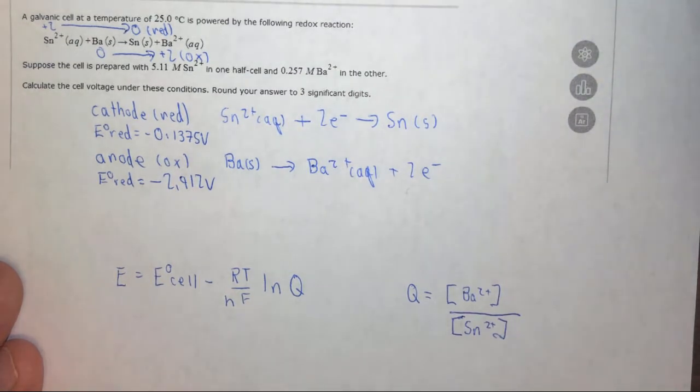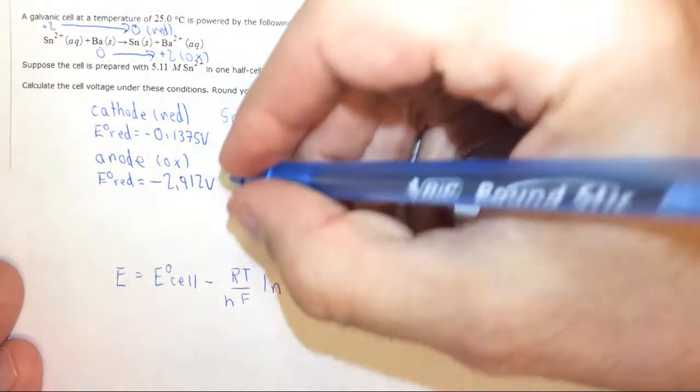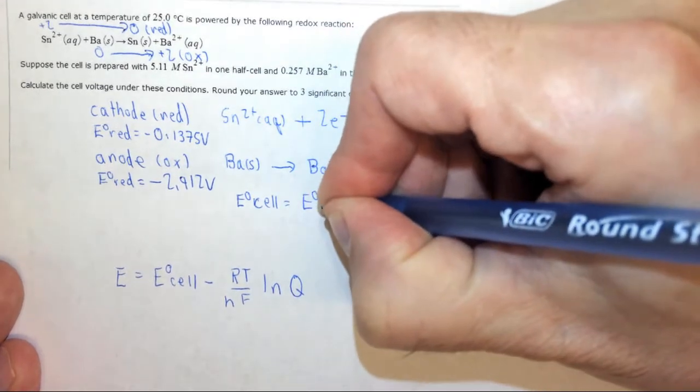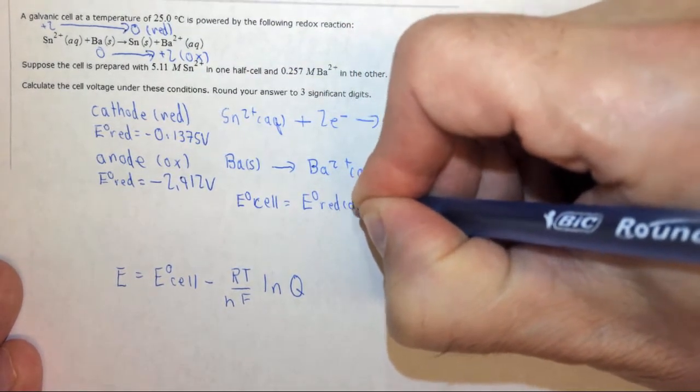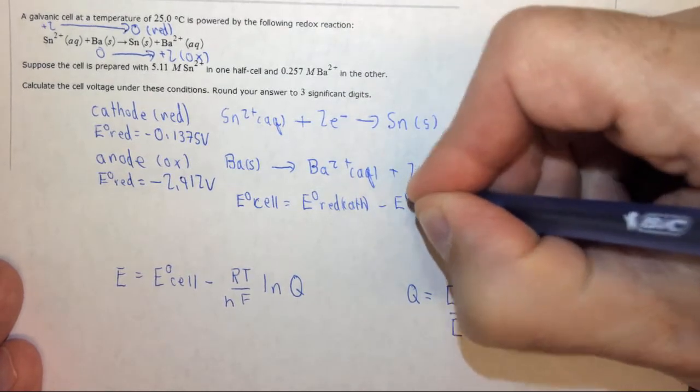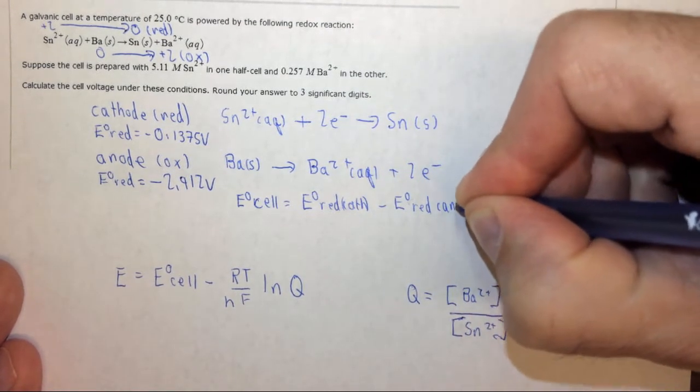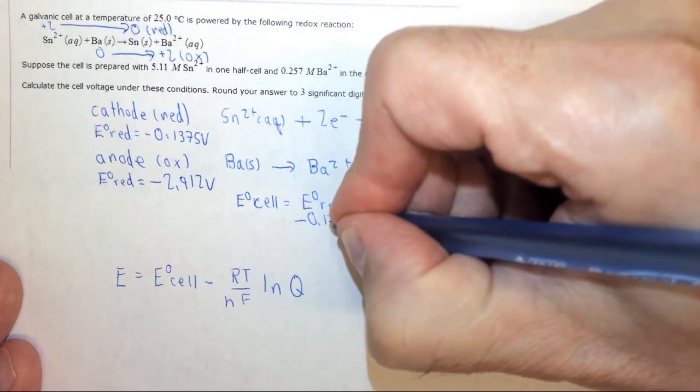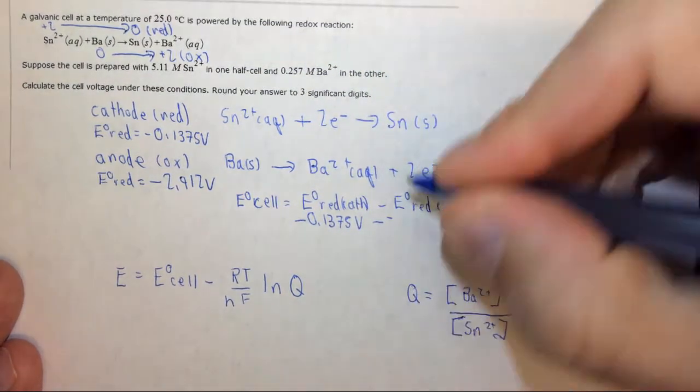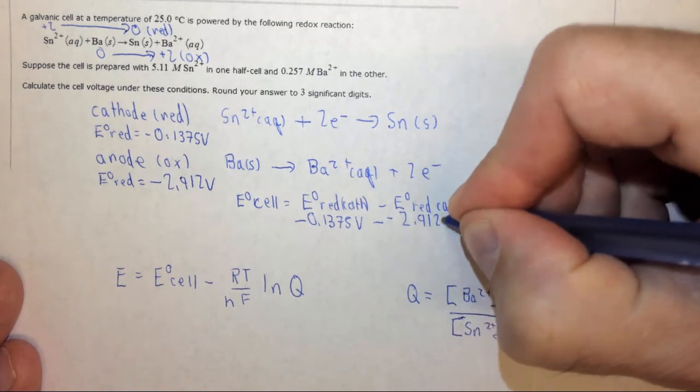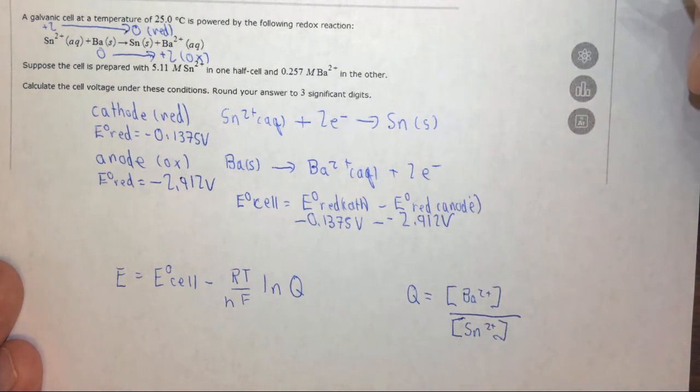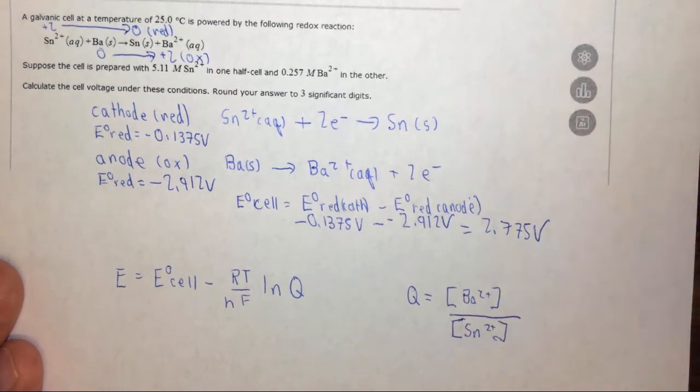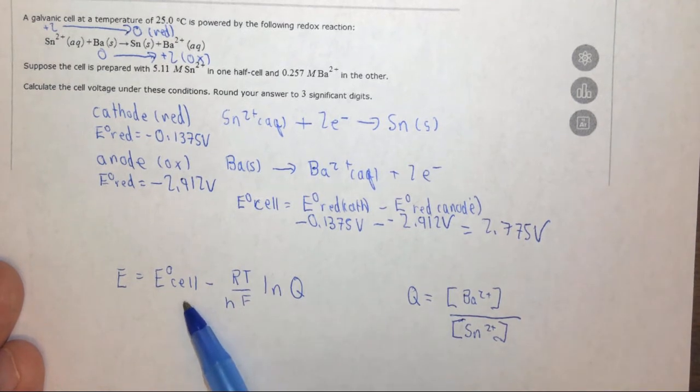So now we need to find the standard reduction potential of the cell, and of course the standard reduction potential of the cell is the standard reduction potential at the cathode minus the anode. So in this case it's negative 0.1375 volts minus negative 2.912 volts, and if we do it to three decimal places we get 2.775 volts. We now know E naught cell.